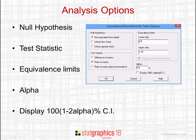When equivalence testing was first developed, it was common to display 100(1-2α)% confidence intervals. More recently, 100(1-α)% confidence intervals have come into favor. Either way, you will get the same results.